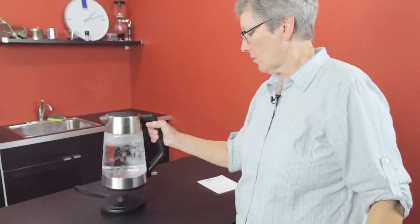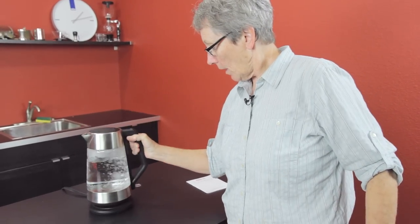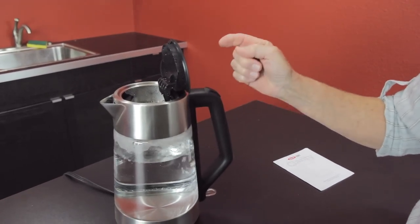This is considered to be cordless because the base and the cord stays behind. It has a nice soft-touch handle and a slow-open lid, which is kind of nice.